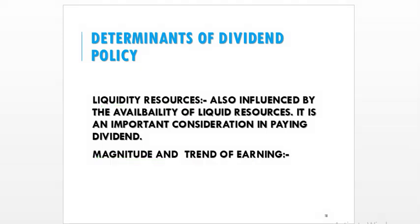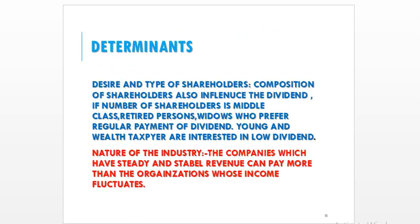The company has to consider the desires and types of shareholders, because payment of dividend to equity shareholders is discretionary — it is not mandatory. The board of directors has to decide whether to pay the dividend or not. Once it is recommended and declared at the Annual General Meeting, it has to be paid; otherwise it is not mandatory to pay the dividend. Still, the desire and type of shareholder also affects the dividend policy.